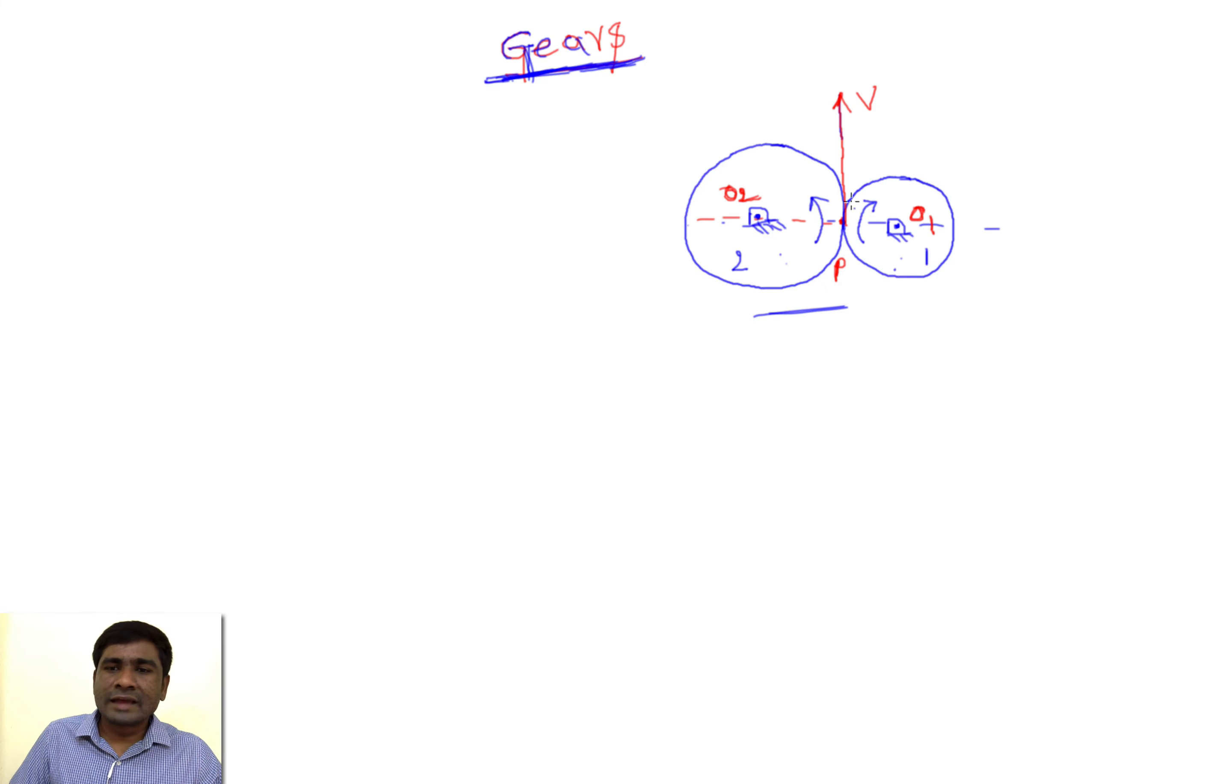When they touch tangentially, they can either roll or slip. Roll means if this is rolling, this also rolls without any slipping. If this is slipping instead of making the other one roll, there won't be any motion transfer to the second one.